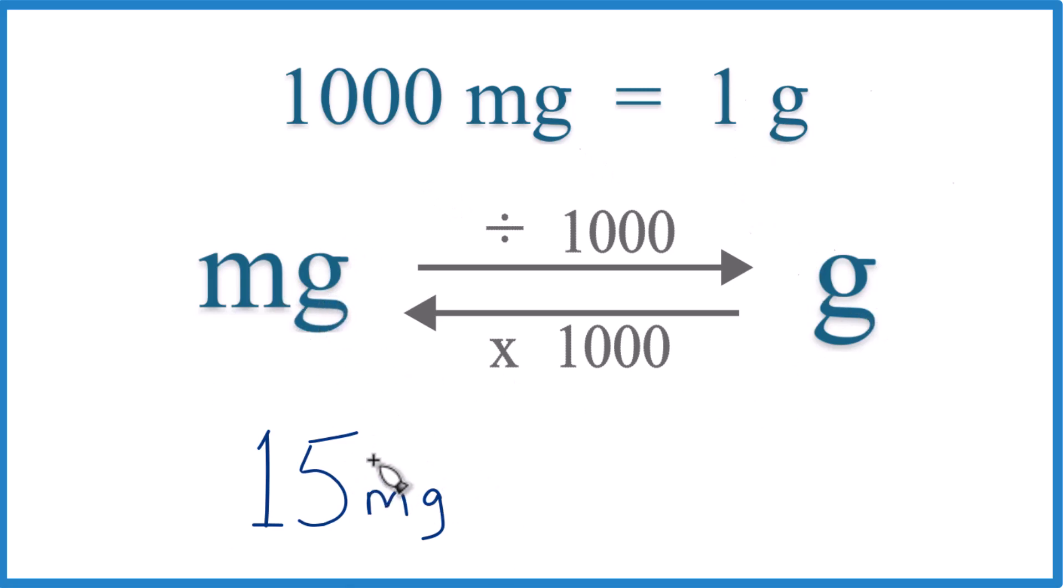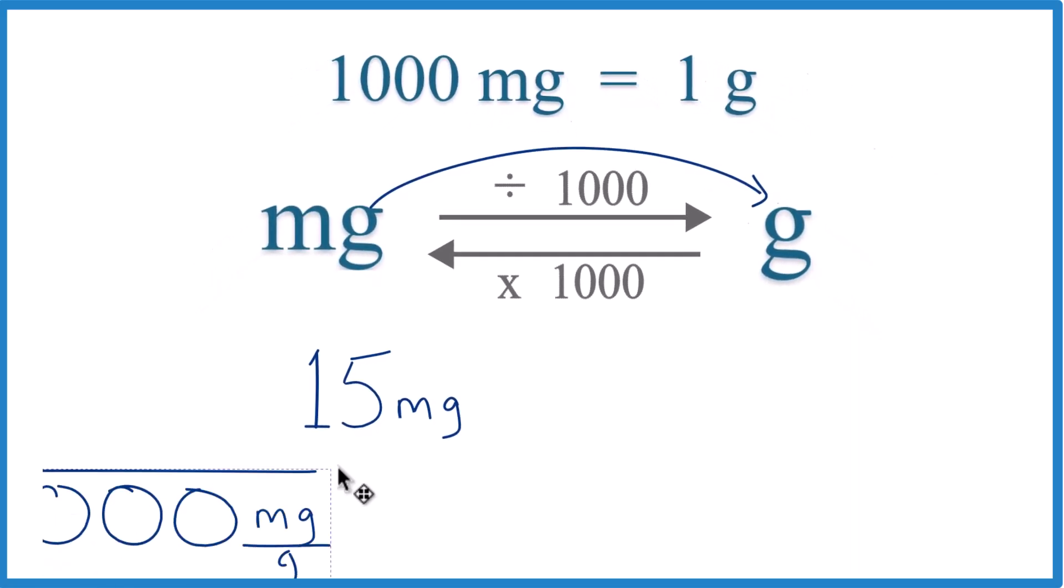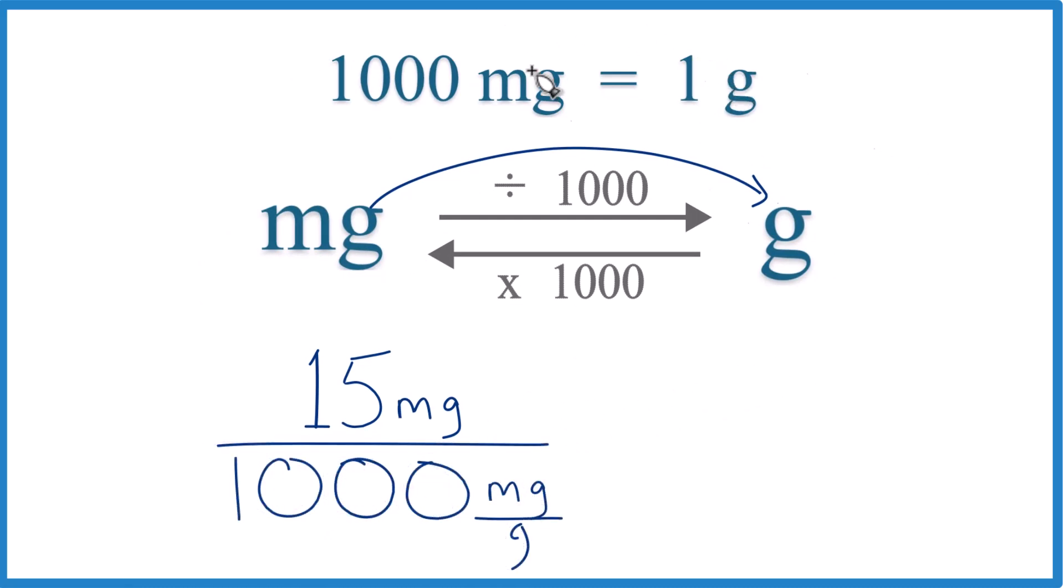Here we have 15 milligrams. We want to get that to grams. We're going to divide by 1,000, like this. And that's 1,000 milligrams per gram. That came from our conversion factor here.